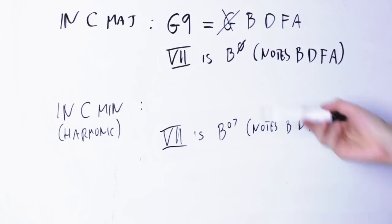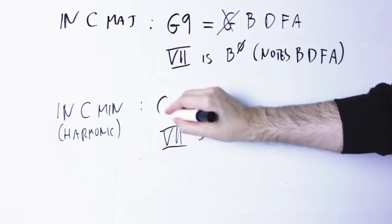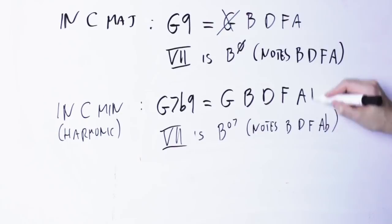If I eliminate the root, the G, I have the seventh chord which is the B half diminished. In C minor, the dominant ninth chord is G seventh with a flat nine, with notes G, B, D, F and A flat. If I eliminate the root G, then I have the B diminished seventh chord.